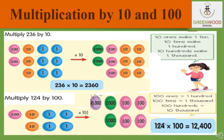Next topic is multiplication by 10 and 100. First example: multiply 236 by 10. Split the number — 2 hundreds, 3 tens, and 6 ones. Now each and every number gets multiplied by 10. So 100 multiplied by 10 becomes 1000, 10 multiplied by 10 becomes 100, and 1 multiplied by 10 becomes 10. When we add all of them, we get 2360. So 236 into 10 is equal to 2360.